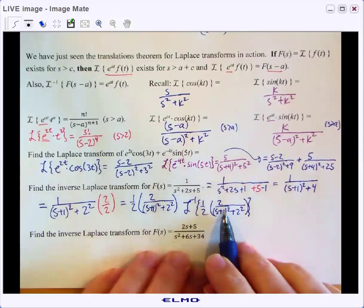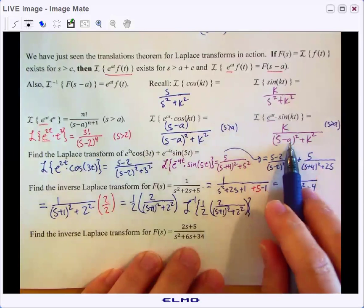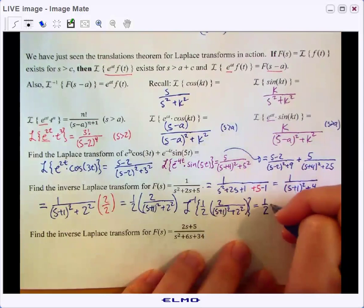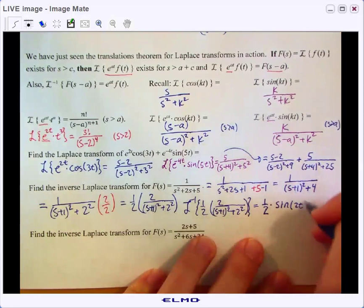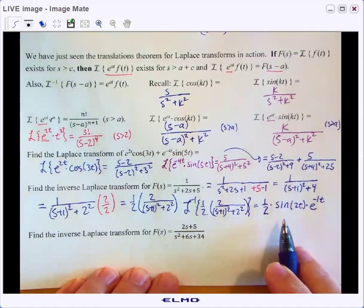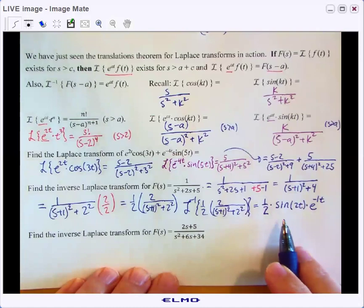And this guy right here we recognize as e to the at times sine of kt, where a is, to get an s plus 1, a has got to be a negative 1. And our constant multiple will factor out. So we'll have 1 half times sine of 2t times e to the negative 1t, and sometimes we write the e to the negative t out front. But basically we've got this guy. So let me let you try this next one, and then we'll check our work together here.